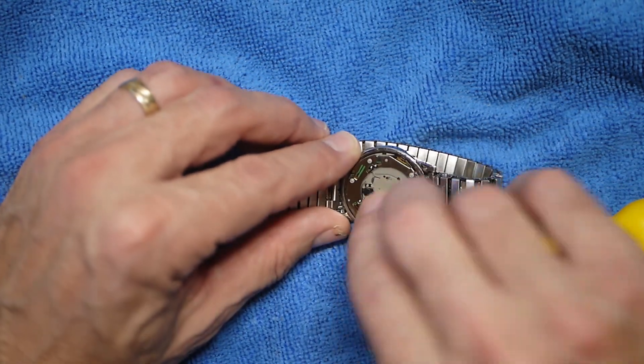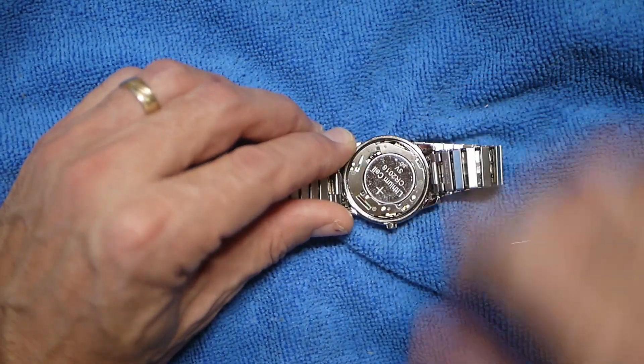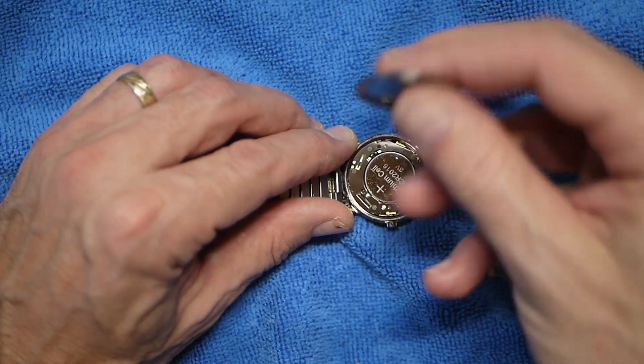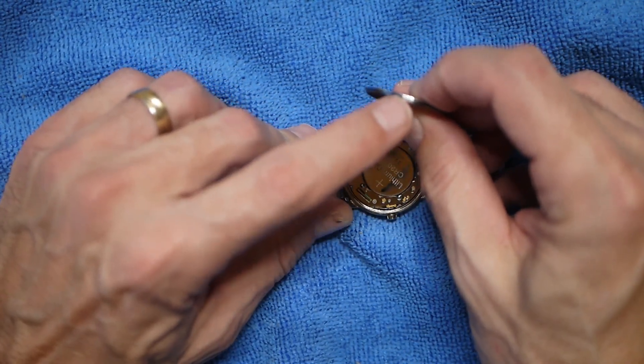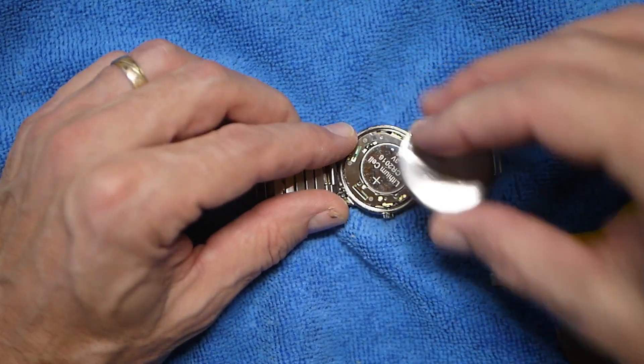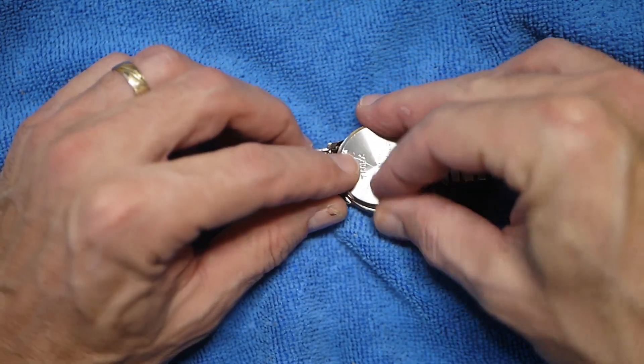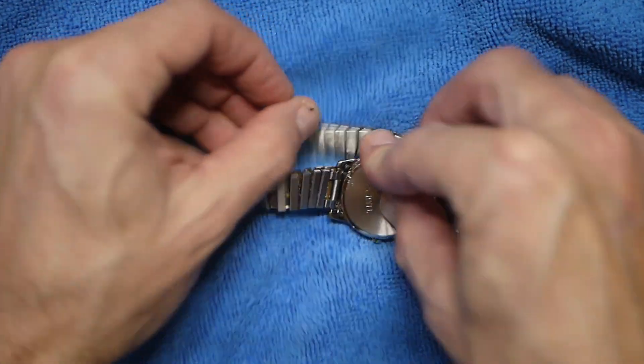A lot of these will have a little indent right here for the crown, the little crown stem right here. So you may have to line that up, so keep an eye out for that. This one does not.